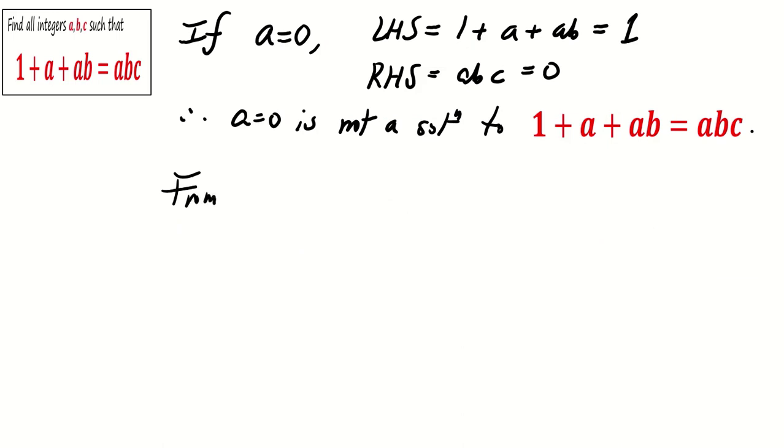From 1 + a + ab = abc, we have 1 + a = abc - ab. Factorizing the right hand side, we get ab(c - 1). As a is not 0,